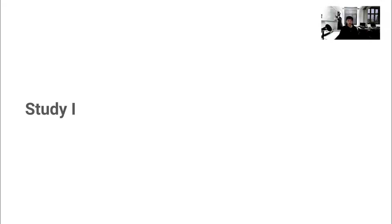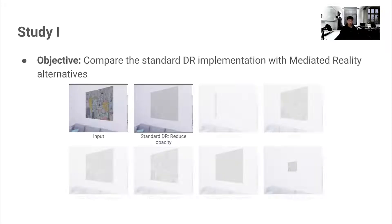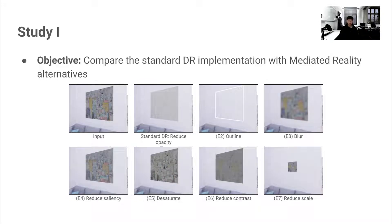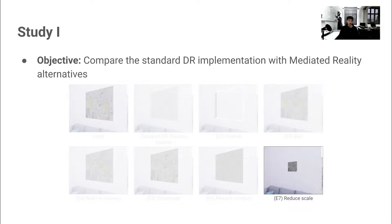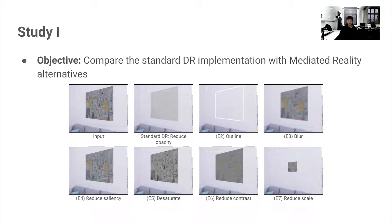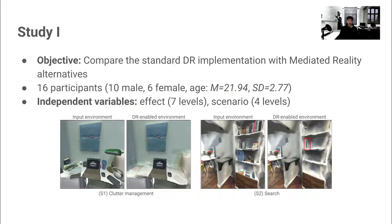Let us dive into the details of our first study. In the first study, we decided to compare the standard diminished reality approach — adjusting the opacity of objects — to six mediated reality approaches informed by prior research. Two examples include desaturation and reducing an object's scale. Part of our purpose was to examine whether the standard diminished reality implementation corresponds with user preferences. We asked 16 participants to evaluate our effects in four scenarios; two examples include managing visual clutter and assisting visual search.